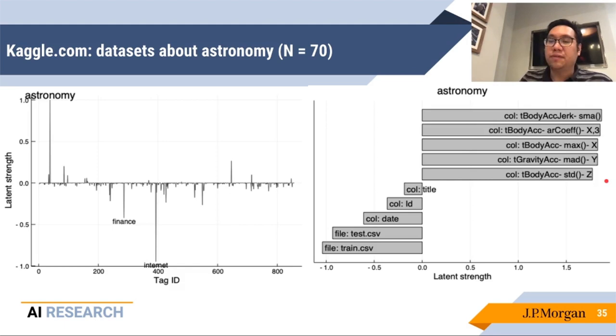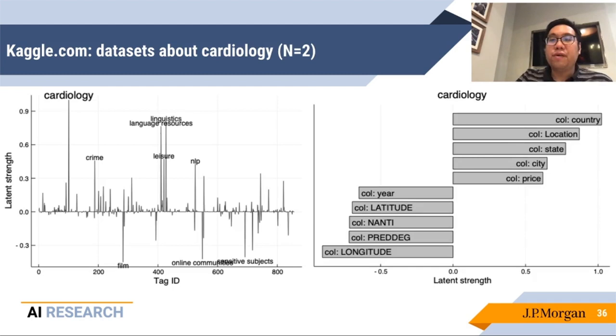Finally, we see a topic belonging to a very rare label, which is cardiology in this example. Now cardiology seems to correlate with country, location, state, city, and price. This might be indicative that the cardiology data set may be something about cost and location of cardiologists, possibly. It's not entirely clear, and it's also not really clear why this would correlate with linguistics or language resources. This could be overfitting. Maybe we should regularize all of these away, but nonetheless, this is what you see based on the data and parameters that we have chosen so far.